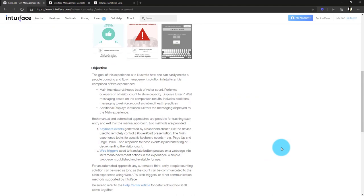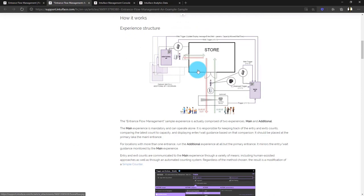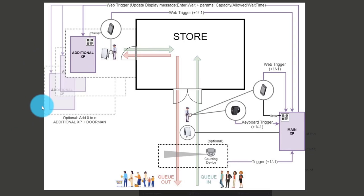What is important for us today is the Help Center article. Let's have a look before diving into the experience in Composer. We have some details about the experience structure. In this entrance flow management, we have two experiences you can download from the marketplace: the main experience, which is the brain of the whole system, and the additional experience, which can be used either for secondary screens on your main entrance or for additional entrances. That's one main experience and as many additional experiences as you want.